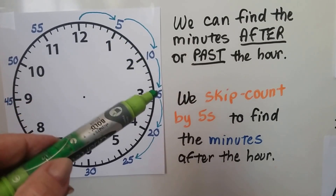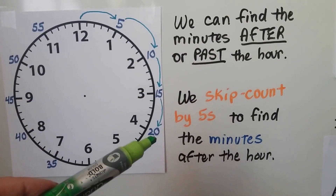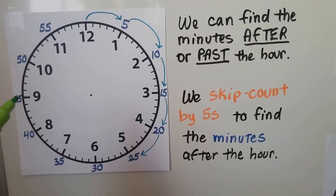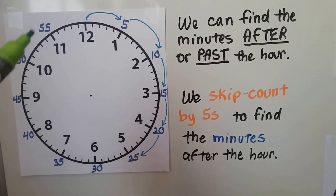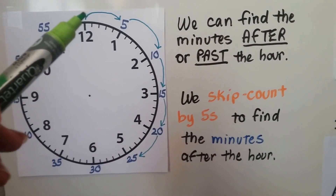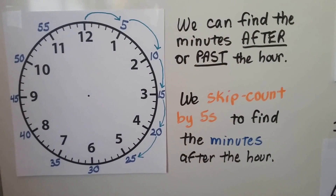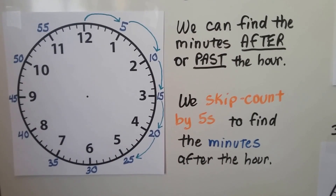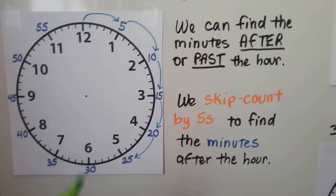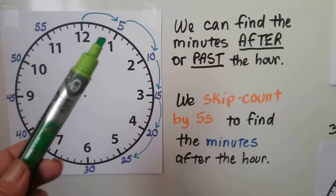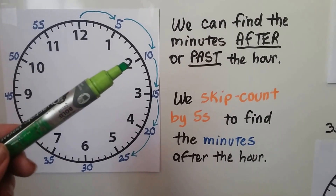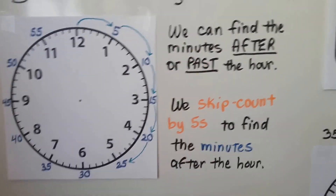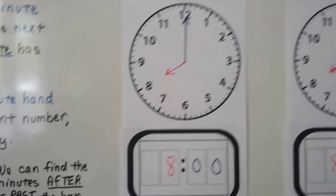So each number we skip count by fives: 5, 10, 15, 20, 25, 30, 35, 40, 45, 50, 55. When it gets back up to the 12, that's 60 — and there are 60 minutes in one hour. We can read the minute hand when it's pointing to one of these numbers by skip counting by five.